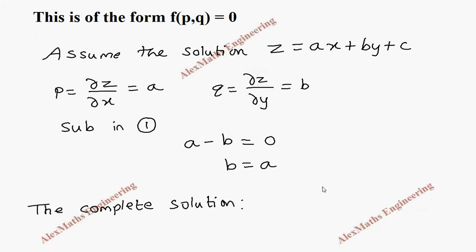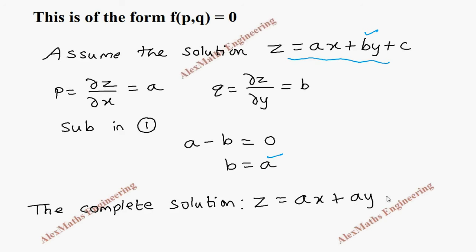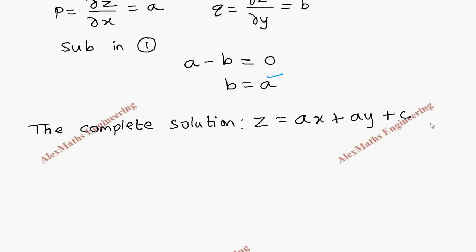Now using this value of b, we are going to write the complete solution. Substituting b = a into z = ax + by + c, the complete solution is z equal to ax plus ay plus c. We take this as the second expression.